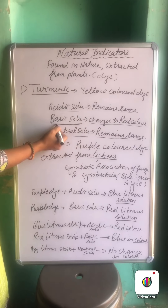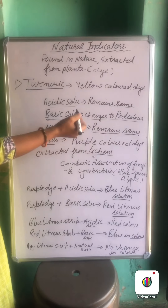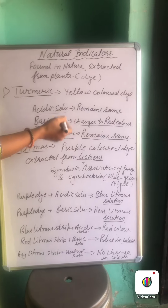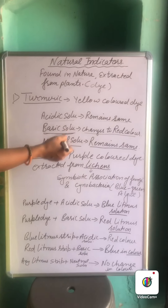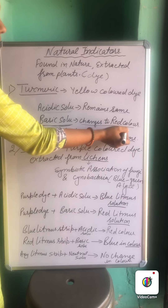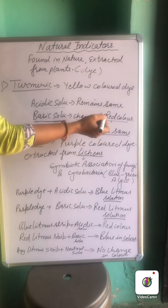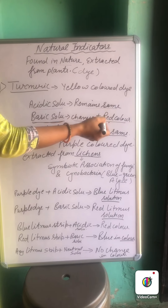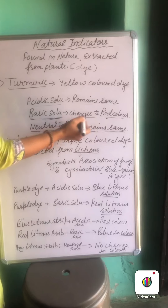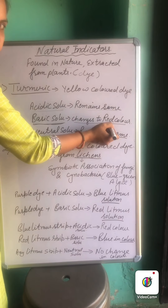When we add turmeric to a basic solution, it changes to red color. A good example of this is soaps and detergents, whose nature is basic. That is why a patch of turmeric changes to red in color when it comes in contact with them.